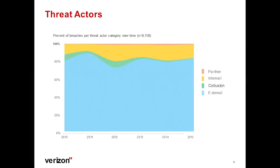On threat actors: over the last five years since 2010, there's always been a discussion — is the threat coming from internal, external, or a partner? You can see the external is pretty much staying at around 80%. The rest is just under 20%. You might notice the total is over 100% — that's because where there is collusion, we add one to both threat actor channels. That's why the total goes just a little over 100%: there's a small group of incidents with more than one threat actor.